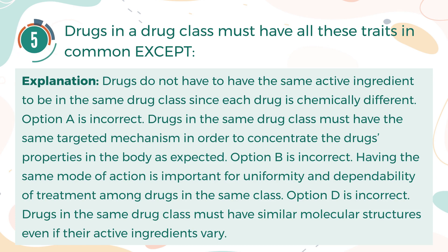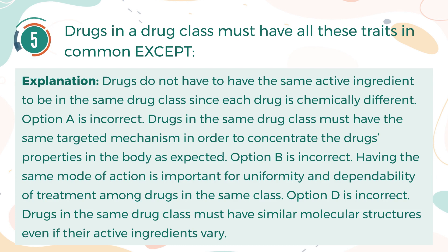Option A is incorrect. Drugs in the same drug class must have the same targeted mechanism in order to concentrate the drug's properties in the body as expected. Option B is incorrect. Having the same mode of action is important for uniformity and dependability of treatment among drugs in the same class. Option D is incorrect. Drugs in the same drug class must have similar molecular structures, even if their active ingredients vary.